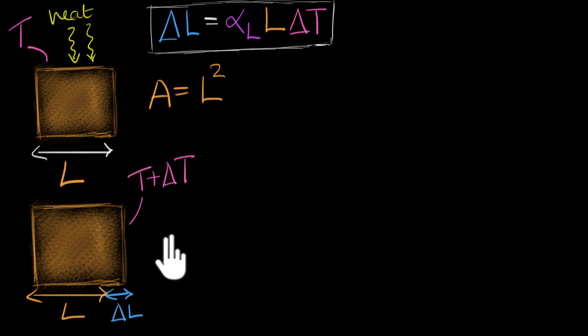What would be the final area? Well, the final area, let's call it as A dash, that would be the final side squared, right? So final side length squared. So what's the side length now? Well, it is L plus delta L. So it would be L plus delta L, the whole squared.